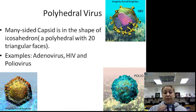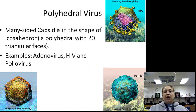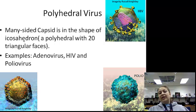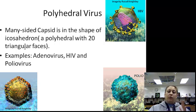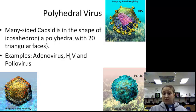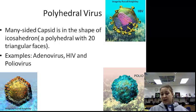Polyhedral — it is many sides. Most of the time we see an icosahedron, which is 20 sides with triangular faces. Examples include an adenovirus, HIV with its many sides, and the polio virus.